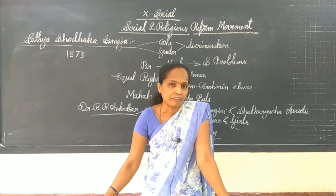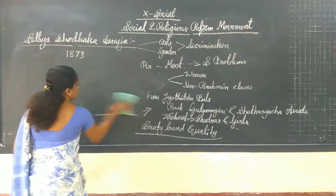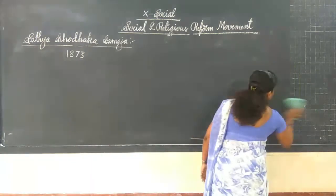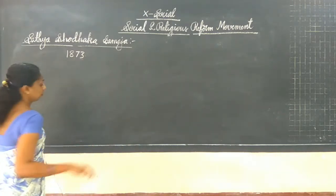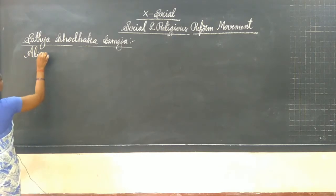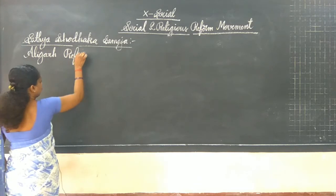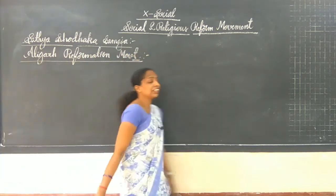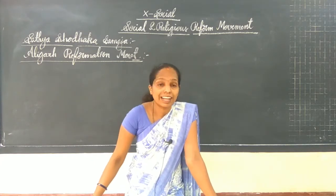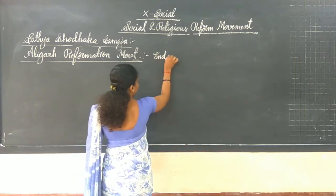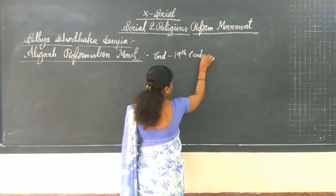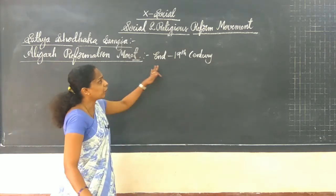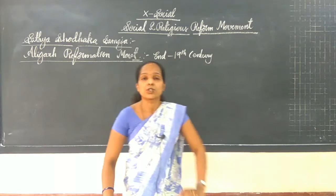Now let's go for another one. There is an Aligarh Movement. During the last part of the 19th century, or the end part of the 19th century, what happened here? We learned that all these movements and reformations came during the 19th century.